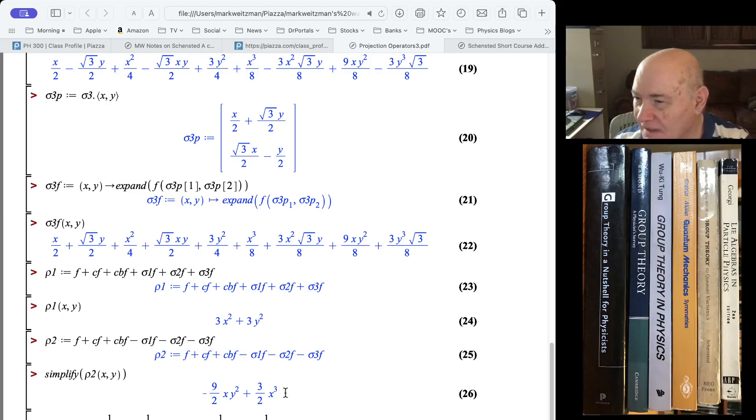Now, row 2, this is the second one-dimensional representation, which has ones for all the identity and rotations, but minus ones for the reflections. So now I get f plus cf plus cbf minus sigma 1f minus sigma 2f minus sigma 3f.